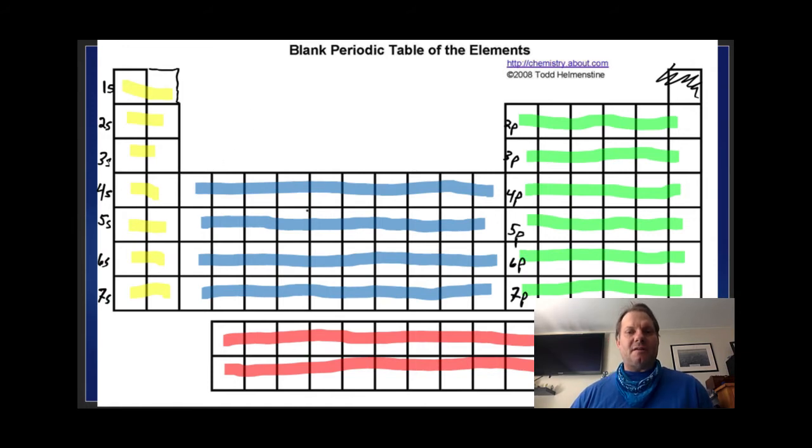Now the central region in the blue are the D sub levels. First energy level one. Energy level one has only one sub level S. Energy level two has the S and the P. Principle energy level three has an S, a P, and a D. So our first D arrives at energy level three. And below that would be four, etc.